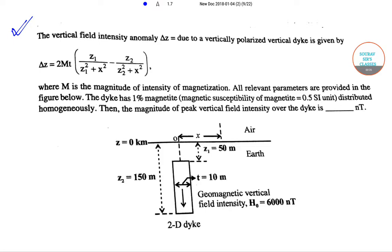Don't get scared, let us do it together. It will be done, it's very easy. The question says the vertical field intensity anomaly delta z, which is equal to a vertically polarized vertical dyke, is given by this relation. What is M? M is the magnitude of intensity of magnetization.